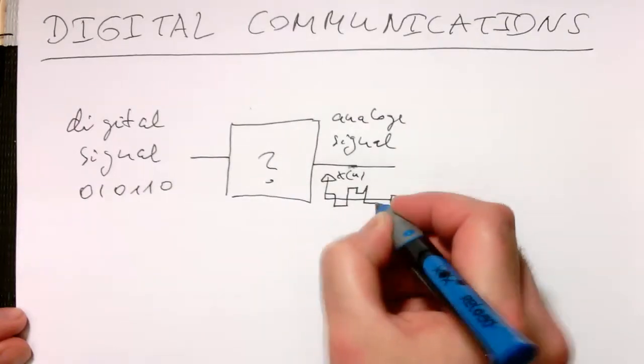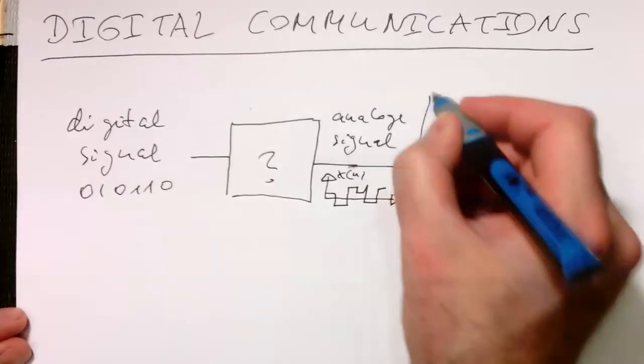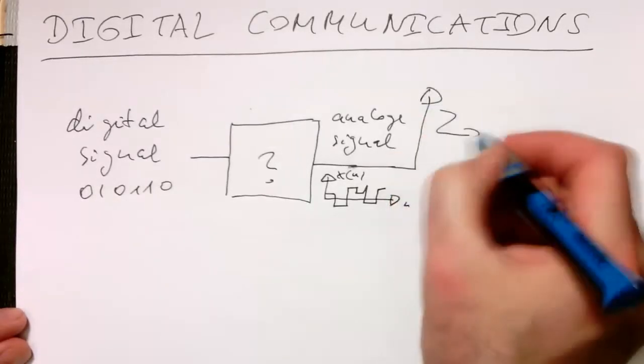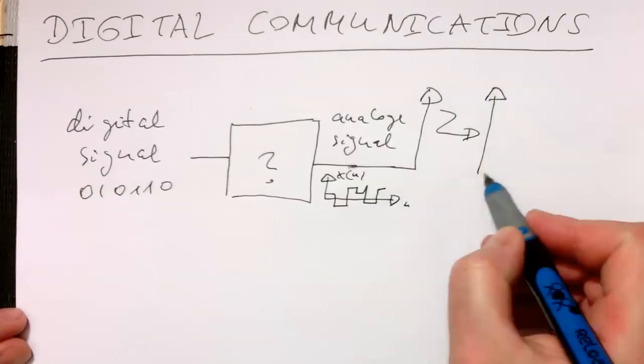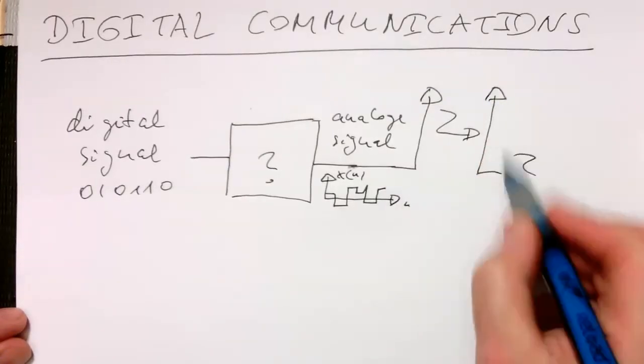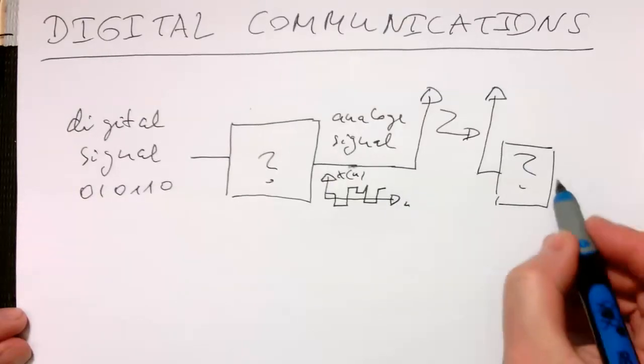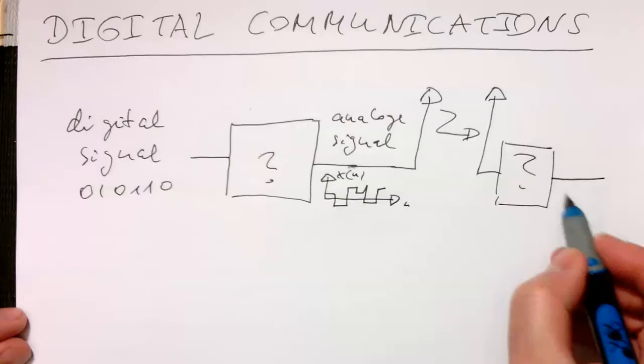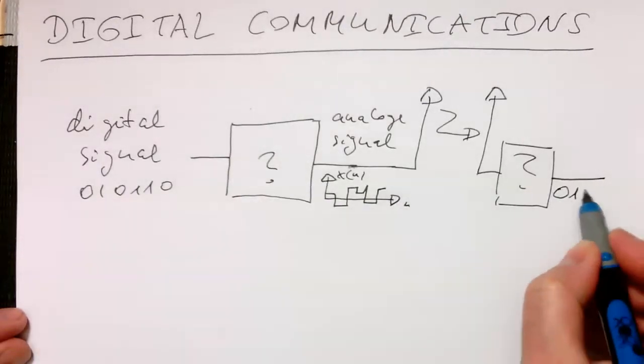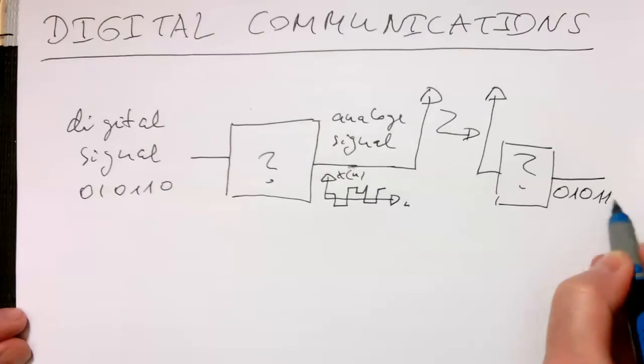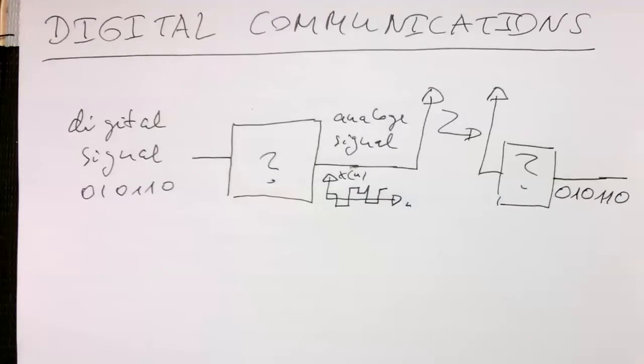We send this via an aerial to our receiver, and then here we've got another box which turns this back into a digital signal again, so hopefully with the same sequence here 0 1 0 1 1 0. That's the idea behind this, or that's what this lecture is about.